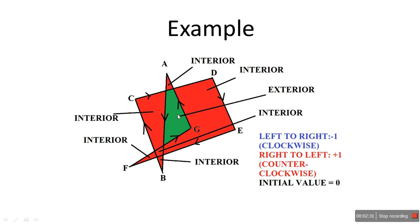Now, what does right to left and left to right actually mean? Let's say we take a point P over here and draw a line to one side. When you stand at that point and look towards the region where you're drawing the line, this side is your right side and this side is your left side. So when we say the edge is going from your right hand side to your left hand side, that's what it means — from your perspective when standing at point P. And left to right means the edge is going from your left hand side to your right hand side.